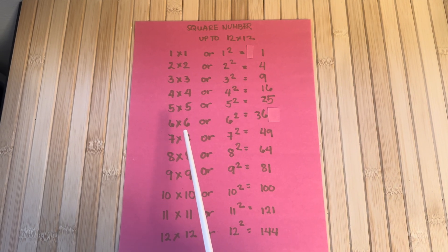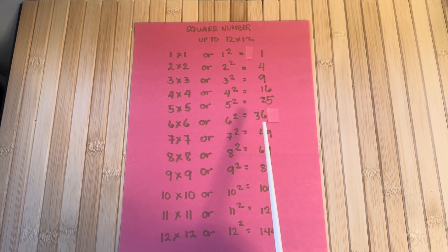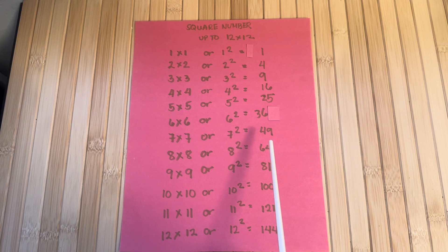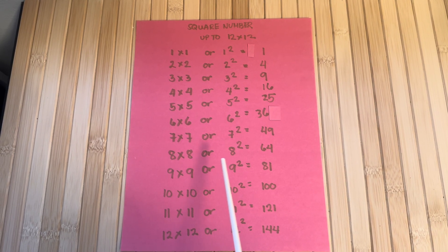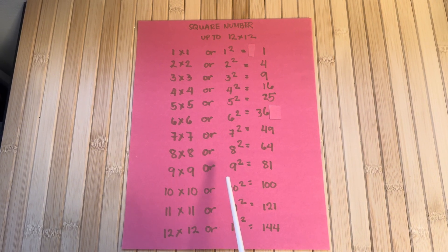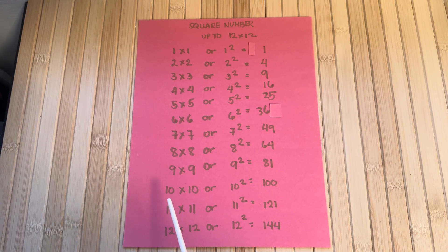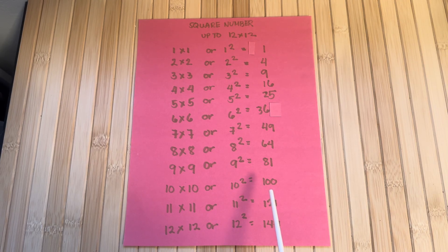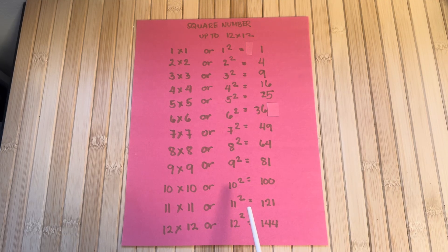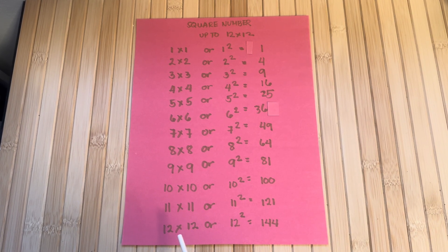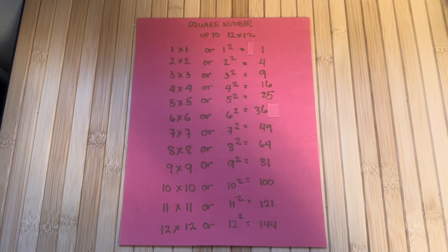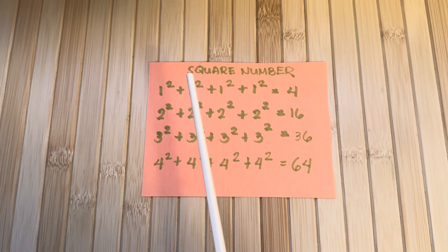6 times 6, or 6 squared, is equals to 36. 7 times 7, or 7 squared, is equals to 49. 8 times 8, or 8 squared, is equals to 64. 9 times 9, or 9 squared, is equals to 81. 10 times 10, or 10 squared, is equals to 100. 11 times 11, or 11 squared, is equals to 121. 12 times 12, or 12 squared, is equals to 144. And now let's add square numbers.